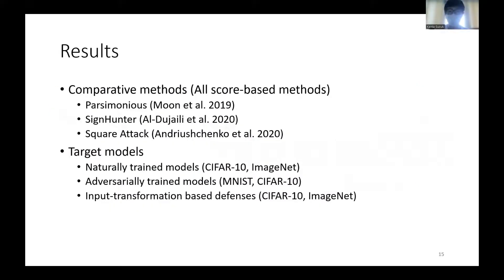I'll cover experimental results. We experimented with three comparative models: Parsimonious, SignHunter, and Square Attack. Target models include naturally-trained models trained on CIFAR and ImageNet, adversarially-trained models trained on MNIST and CIFAR, and input-transformation-based defense models trained on CIFAR and ImageNet.